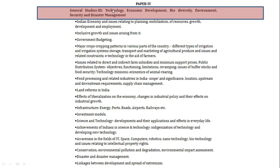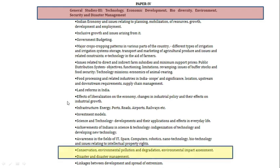General Studies 3 paper is mainly focused on technology and economics, but also includes environmental topics. In General Studies 3, environmental topics specifically mentioned are biodiversity conservation, environmental pollution, environmental impact assessment, disaster, and disaster management.